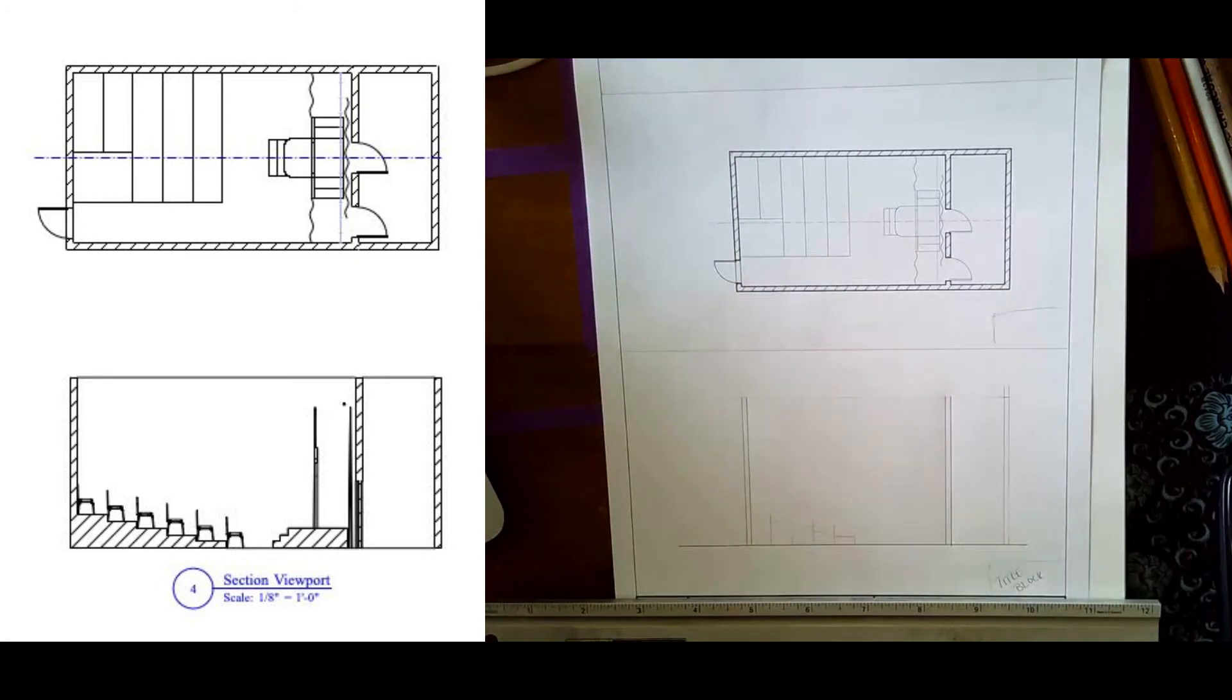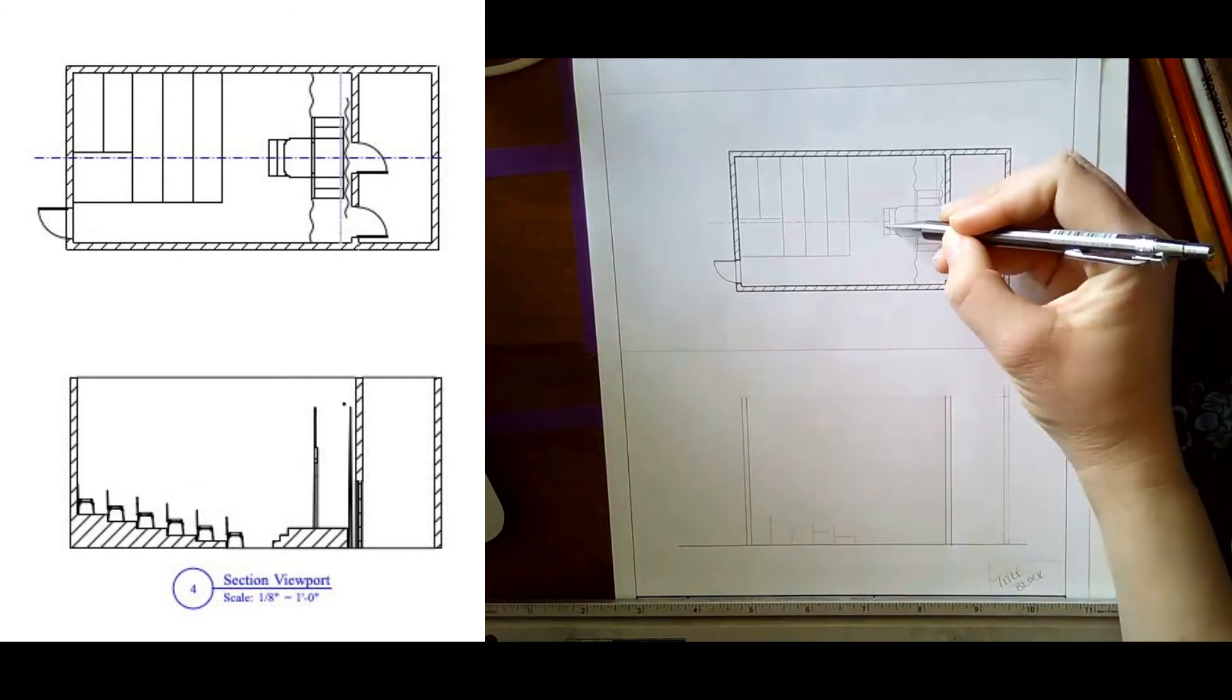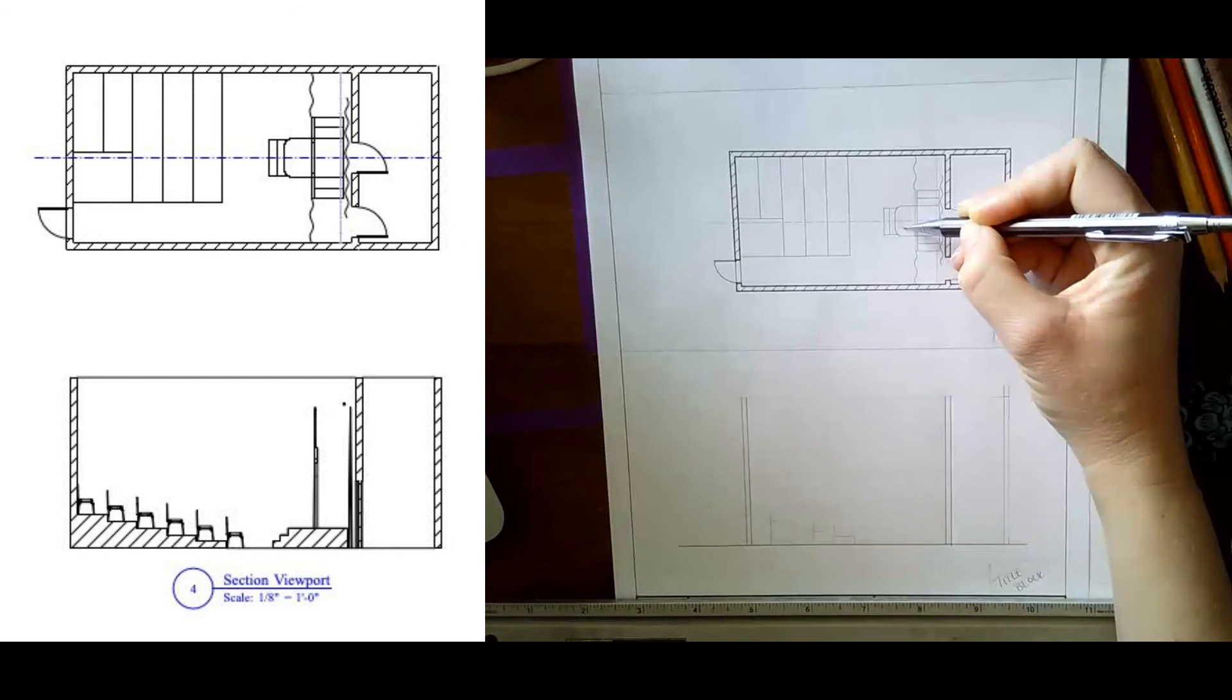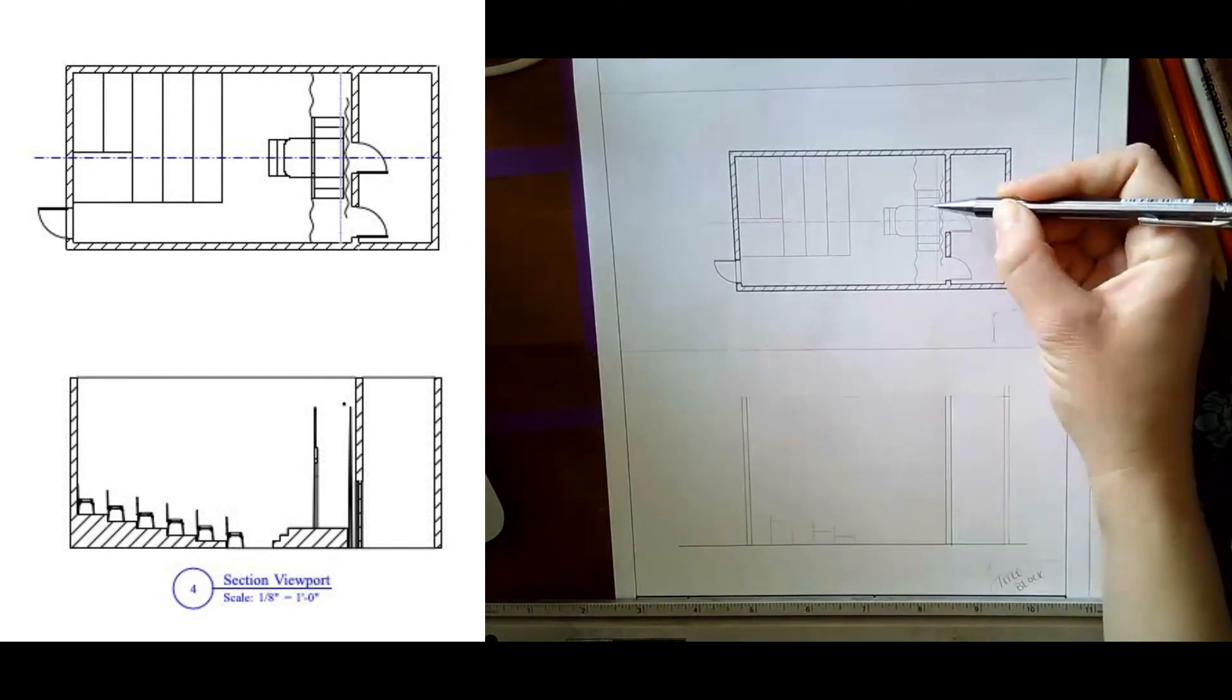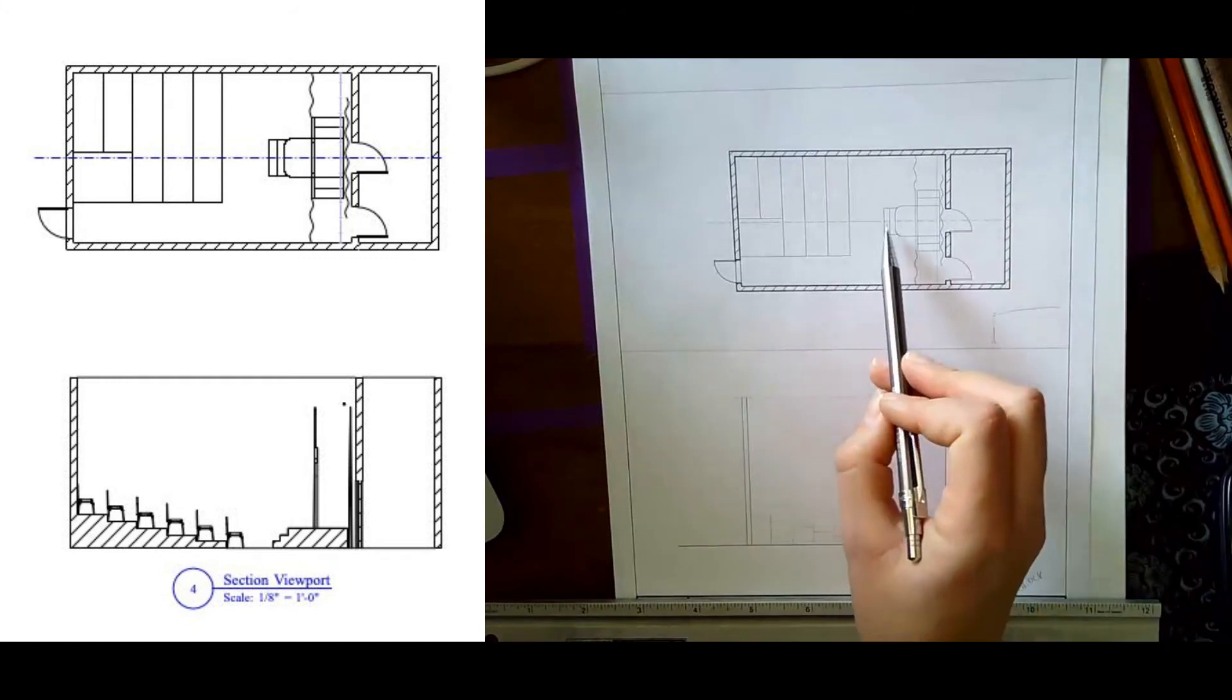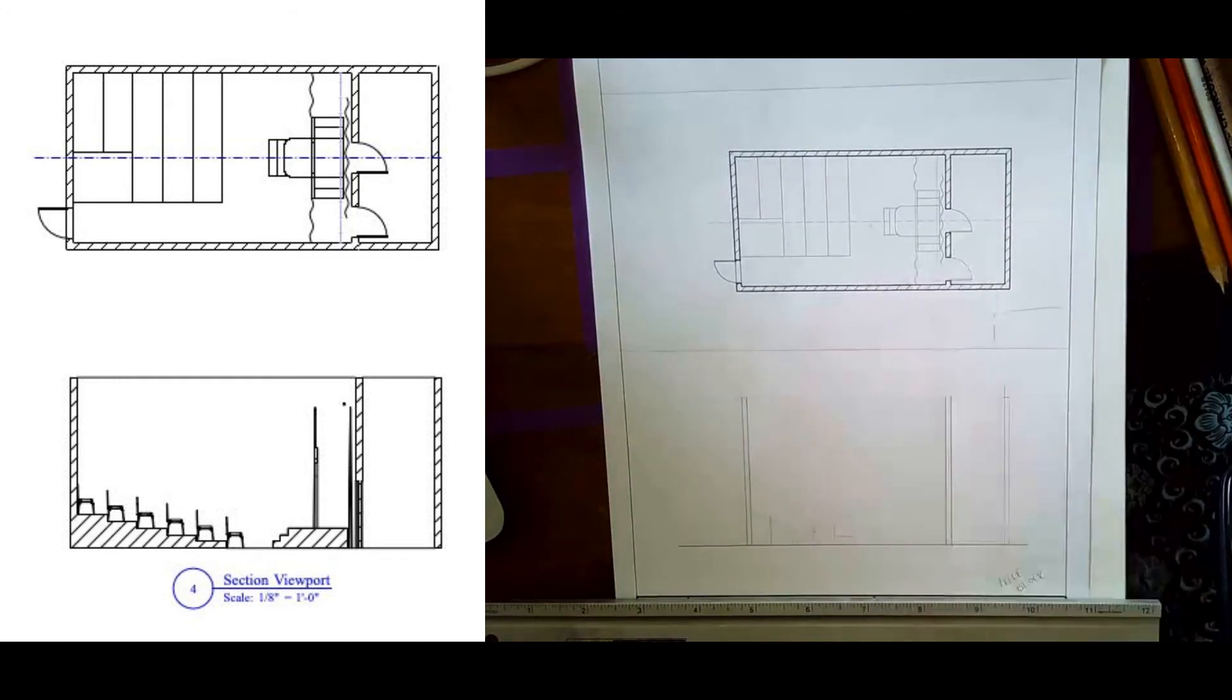Then you're going to do the same thing with the platform unit. So we know that this is eight inches, this is 16 inches, and this is 24 inches above the ground. You're not going to see these stairs, so don't worry about it because the slicing line is this center line, this dashed center line in my drawing.